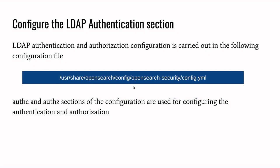Now let's take a look at the important section of the OpenSearch configuration — the LDAP authentication section. The LDAP authentication and authorization configuration is carried out in the configuration file present in the OpenSearch security folder, which is the config.yaml file. The base location may differ based on your installation type. For RPM-based installs it might be at /etc/opensearch-security/config.yaml, but in my case I'm using Docker, so it is at /usr/share/opensearch/config. If you open config.yaml and scroll to the LDAP section, you will see two important sections: authc and authz — authc for authentication and authz for authorization.